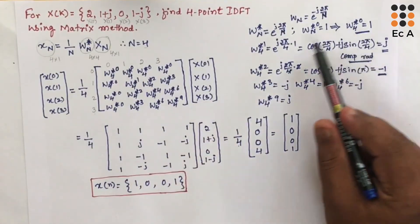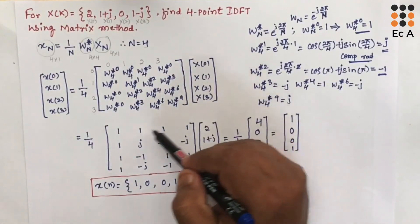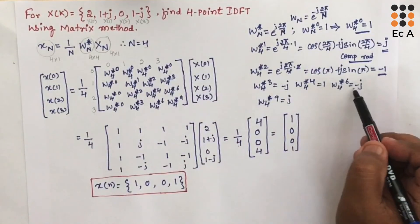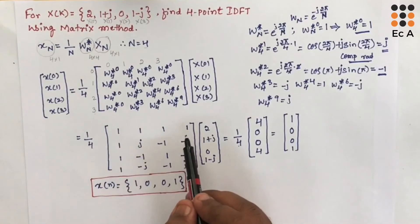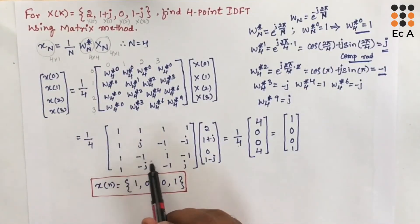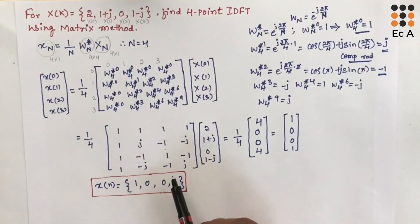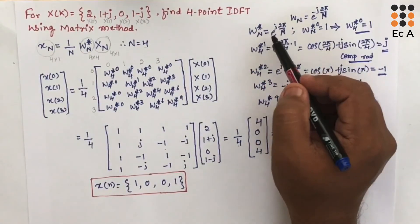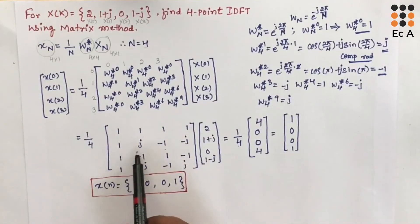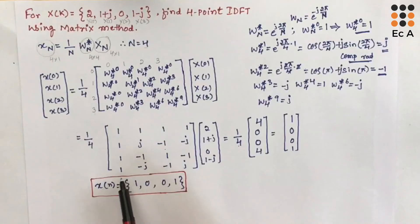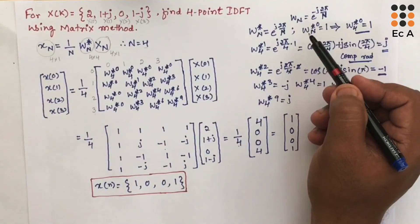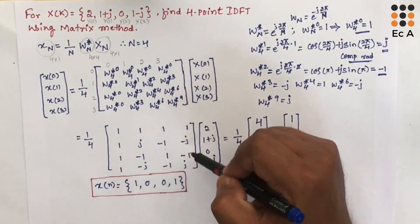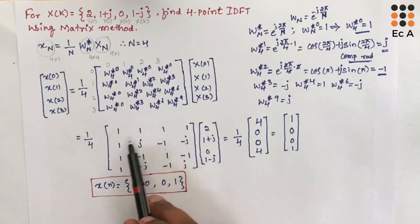Once you write this matrix, you can directly use its values. If you do not remember them, you can use the calculation method. Since the DFT Twiddle factor matrix WN has rows [1,1,1,1], [1,-j,-1,j], [1,-1,1,-1], [1,j,-1,-j], then WN* (its complex conjugate) gives the IDFT matrix with rows [1,1,1,1], [1,j,-1,-j], [1,-1,1,-1], [1,-j,-1,j]. This matrix is the complex conjugate of the DFT Twiddle factor matrix, so if you remember WN, you can directly write WN*.